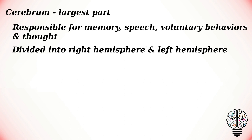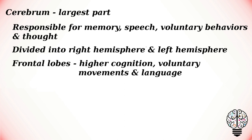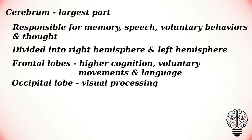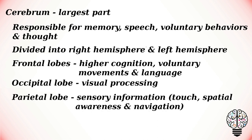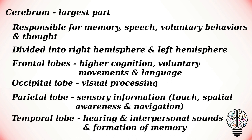Each hemisphere of the brain is divided into four interconnected lobes. They are: frontal lobes, which are associated with higher cognition, voluntary movements, and language; occipital lobes, which are associated with visual processes; parietal lobes, which are associated with processing sensory information; and temporal lobes, which are associated with hearing and interpreting sounds.